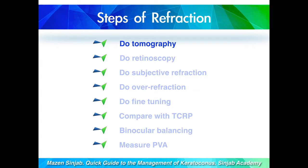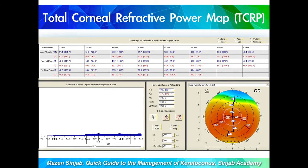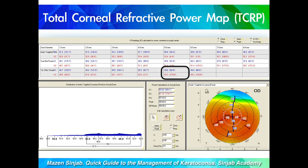Starting with the Tomography. The tomography is important not only to diagnose and classify keratoconus and ectatic corneal diseases, but also to study the real corneal refraction and to calculate corneal refraction and manifest corneal refraction accordingly. In addition, we study the real astigmatism of the cornea by studying the amount of refraction in zones centered with the pupil center, especially the 5 mm zone.